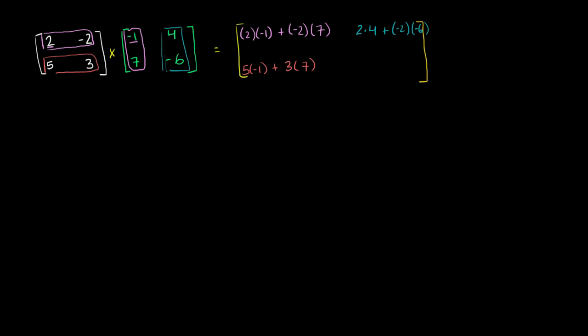And then finally, we're in the home stretch now. To get this bottom row, second column, or second row, second column, we multiply this row essentially by this column right over here. So it is going to be 5 times 4 plus 3 times negative 6.